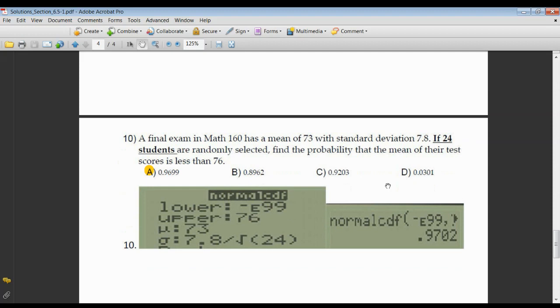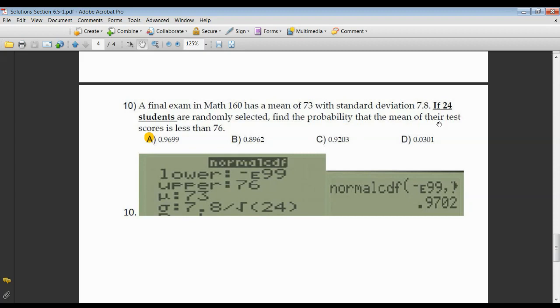And number 10, pretty much the same thing. Find the probability that the mean of these 24 students, the mean of their test scores was less than 76. Lower limit negative E99, upper 76, mean given to me as 73. Standard deviation now decreases because it's 24 students. It's the original standard deviation of 7.8 divided by how many students I'm talking about, my n value. 0.9702. Looks like it's off by a lot, but actually in actuality, between this correct answer and your calculator's answer is only 3 ten-thousandths. That's how close it is. All right, hope this helps.